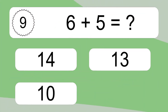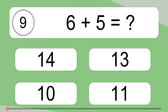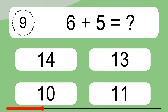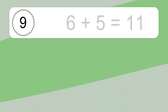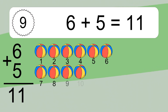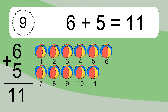Six plus five equals what? Six plus five equals eleven. Let's count it: one, two, three, four, five, six, seven, eight, nine, ten, eleven.